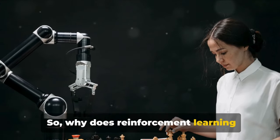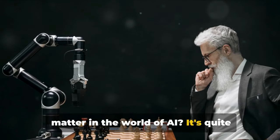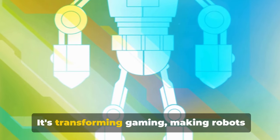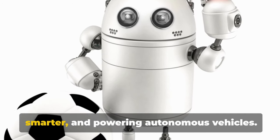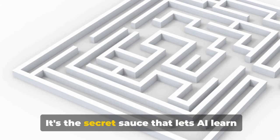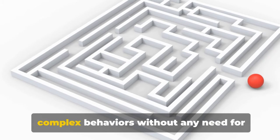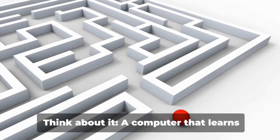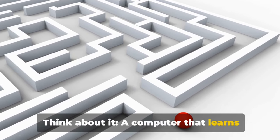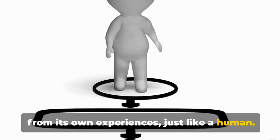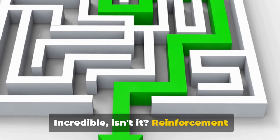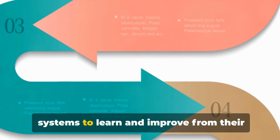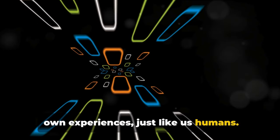So why does reinforcement learning matter in the world of AI? It's quite simple, really. Reinforcement learning is a game-changer. It's transforming gaming, making robots smarter, and powering autonomous vehicles. It's the secret sauce that lets AI learn complex behaviors without any need for explicit programming. Think about it, a computer that learns from its own experiences just like a human. Incredible, isn't it? Reinforcement learning is revolutionizing AI, enabling systems to learn and improve from their own experiences just like us humans.